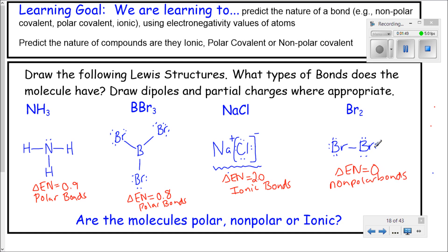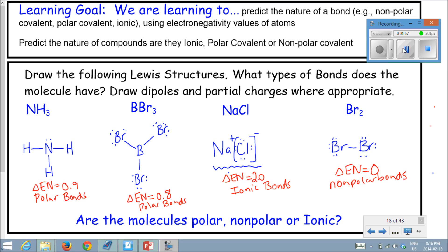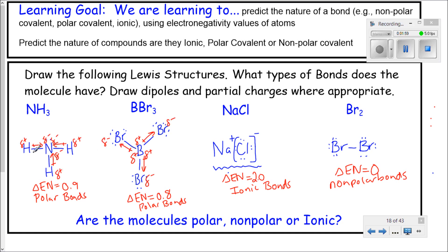We are going to draw all the dipoles for all the ones that have polar bonds. They point towards the more electronegative atom. If you look, I've added all my partial negative and partial positive charges, pointed my dipoles to the more electronegative atom.